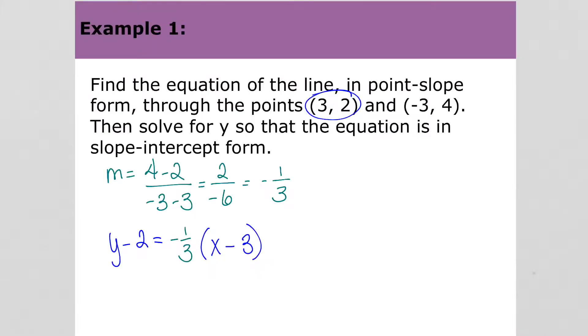We'll take that equation and solve it for y. Start by distributing the one-third. Negative one-third times negative 3 is just plus 1. Then add 2 to both sides. The equation of our line is y equals negative one-third x plus 3. That's it.